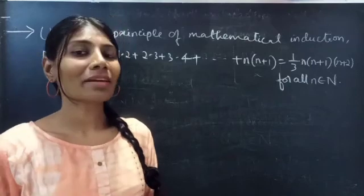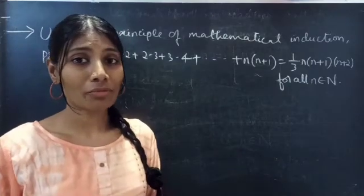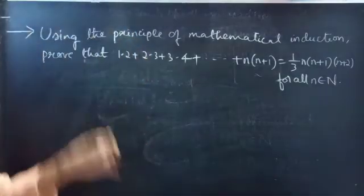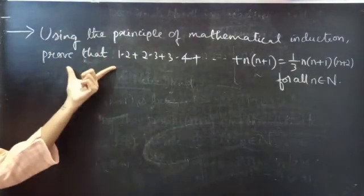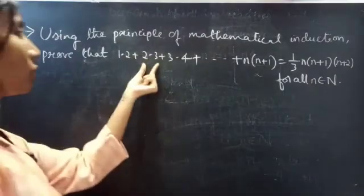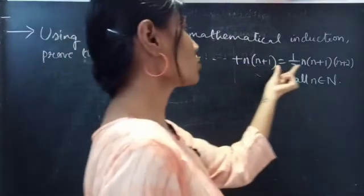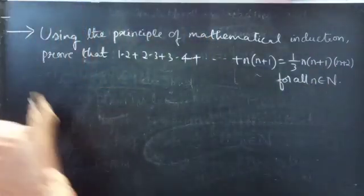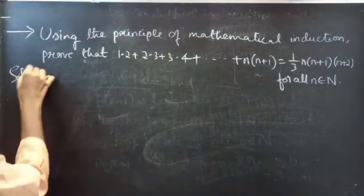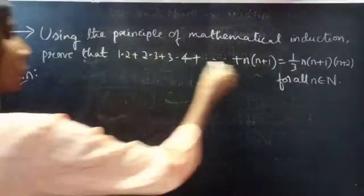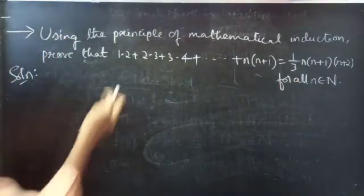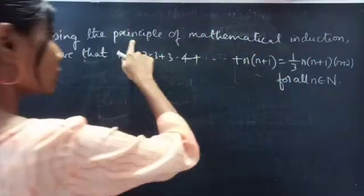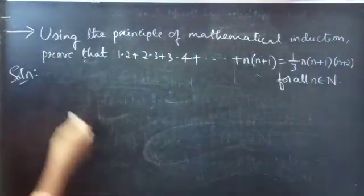Hello everyone, this is Jai Dalpna here. In this video, we are going to see a problem from mathematical induction. So let's get started. Problem: Using the principle of mathematical induction, prove that 1·2 + 2·3 + 3·4 + ... + n(n+1) equals (1/3)·n(n+1)(n+2) for all n belonging to natural numbers.